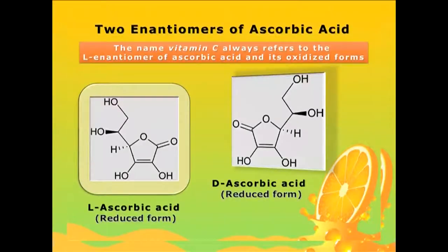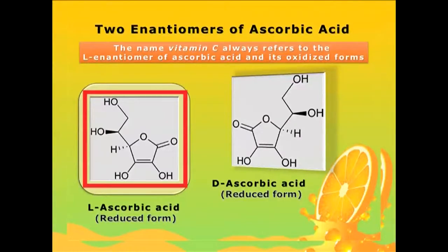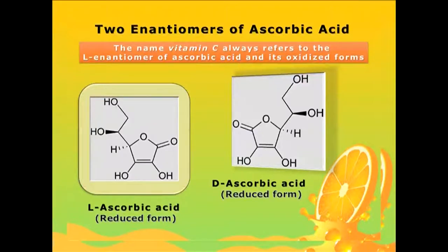Ascorbic acid can exist as two enantiomers. Enantiomers are stereoisomers that are mirror images of each other and are not superimposable. Ascorbic acid has two enantiomers: L and D ascorbic acid. However, vitamin C always refers to the L-ascorbic acid in its reduced state.